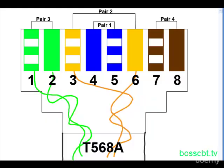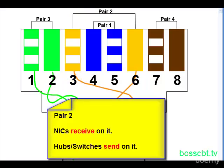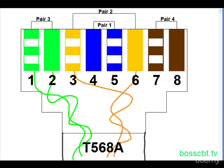Information is going to be sent back from the hub or switch to the PC. Hubs and switches use pair two, which is pins three and six, the orange ones, to send data to a PC. A NIC uses pair two to receive data. You can see the opposites, but it makes sense they're opposites, because if I'm going to send on one pair, whoever I'm sending to has to receive on that pair.